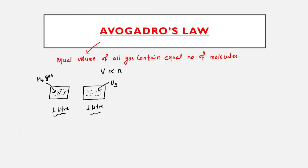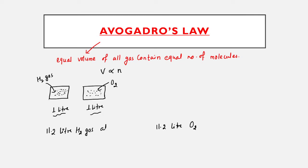Let us verify this mathematically. Suppose we take 11.2 liters of hydrogen gas at NTP conditions, and 11.2 liters of oxygen gas also at NTP. How many molecules does each 11.2-liter volume contain?